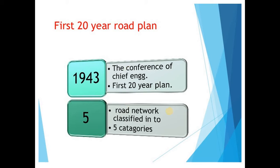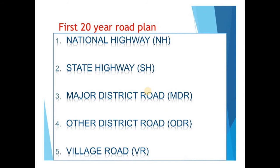They classified roads into 5 categories: national highways, state highways, major district roads, other district roads, and village roads. These were implemented every year in the first 20-year plan itself.